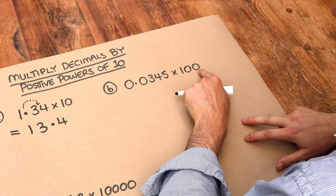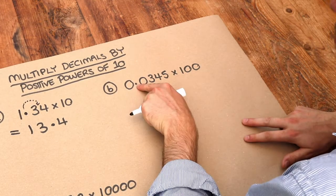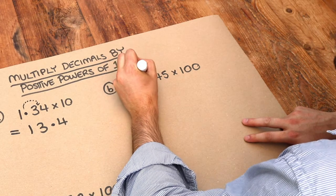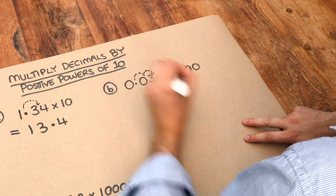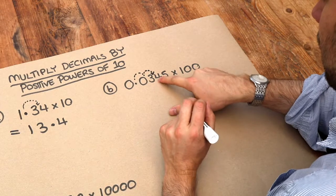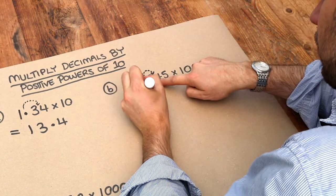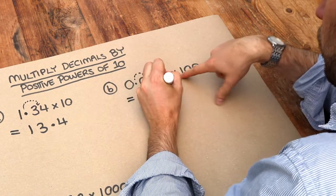What about this one? We've got two zeros, and therefore the decimal point moves two places to the right. So now it's between the three and the four, so we've got 3.45.